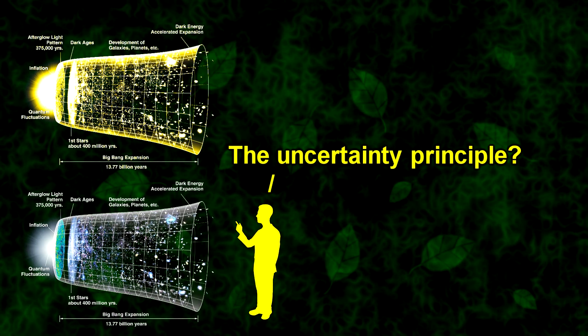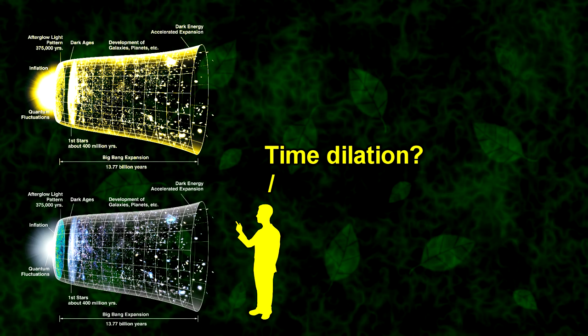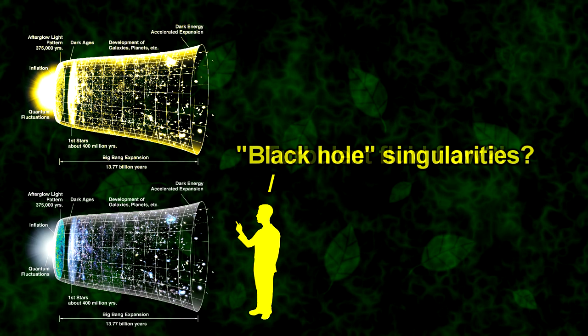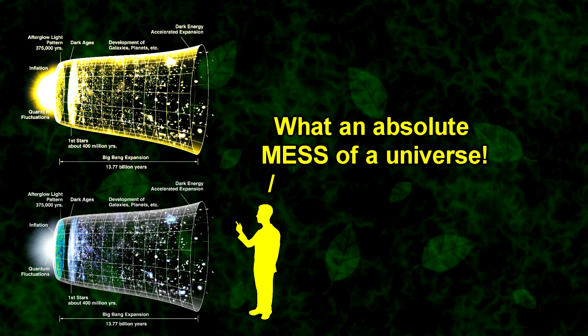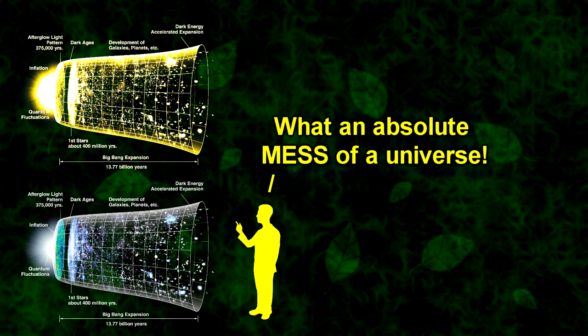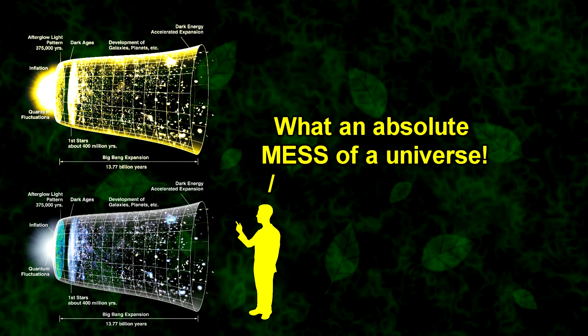As one final way of illustrating just how disordered our universe actually is, imagine a person from the hypothetical, highly ordered universe we just described, and imagine what this person would think as they looked at our universe. A person like this could easily look at our universe and conclude that our universe is exactly what you'd expect to see if God did not exist. The uncertainty principle? Time dilation? Black hole singularities? Turbulent fluid flow? What an absolute mess of a universe.